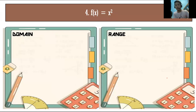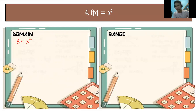Number 4: f(x) = x². Getting the domain is easy — there is no variable in the denominator and no radical sign. So y = x², and the domain is automatically all real numbers. In interval notation: (-∞, +∞).